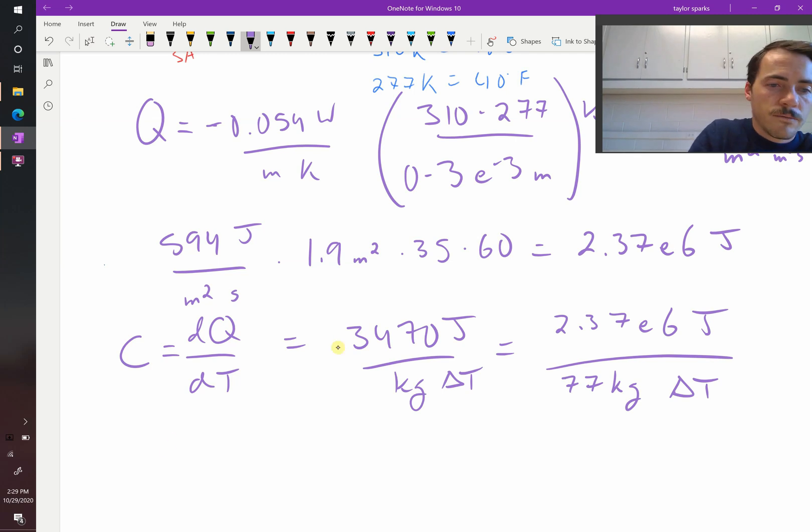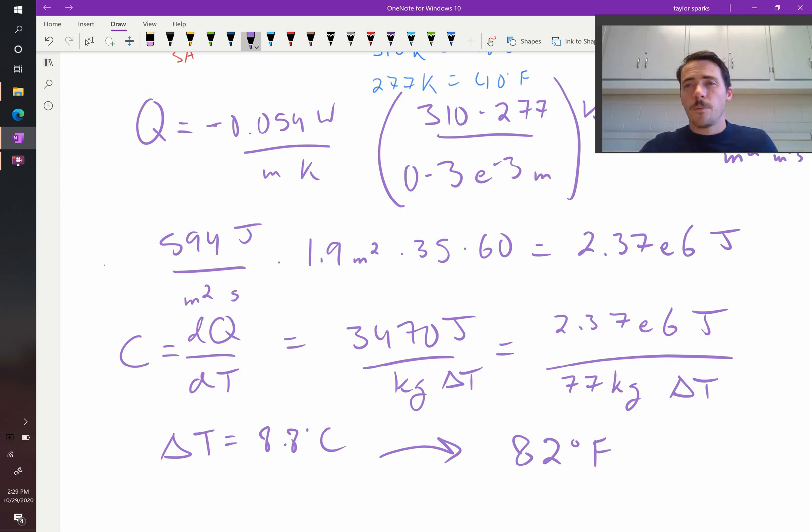When I solve for delta T, I get that it's 8.8 degrees Celsius or Kelvin, is how much it's lost. And if you translate that to the change in temperature, you find that this person would be at 82 degrees Fahrenheit, which is very hypothermic.